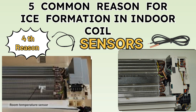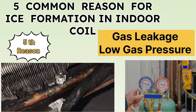The fifth reason is gas or Freon leakage or low refrigerant charge. When we install an AC, if there is a leakage, after some time there will be a lack of refrigerant and ice formation in the indoor unit. As the unit gets older, leakage can also occur. To avoid this, keep the refrigerant pressure normal — for R-410A it should be around 110 to 115 PSI. Check the pressure and there will be no ice formation in your indoor unit.